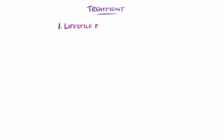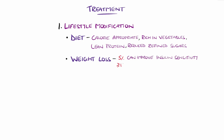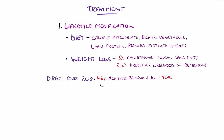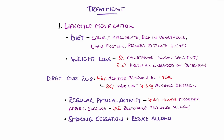Lifestyle modification is the cornerstone of type 2 diabetes management and should be initiated at diagnosis and maintained long-term. Key changes include a calorie-appropriate diet rich in vegetables, whole grains, proteins, and healthy fats, while reducing intake of refined carbohydrates and sugars. A 15% or above weight loss increases the likelihood of remission. The DiRECT study in 2018 showed that 46% of participants with type 2 diabetes achieved remission at one year following an intense weight loss program, with over 85% of those who lost more than 15 kilos achieving it. Regular physical activity is beneficial independently of weight loss, and it is recommended at around 150 minutes of moderate-intensity aerobic exercise per week, alongside resistance training on two or more days. Smoking cessation is strongly encouraged, and structured diabetes education and behavioural support have been shown to enhance adherence and outcomes.